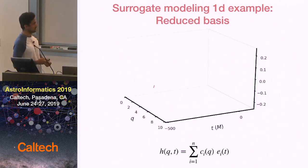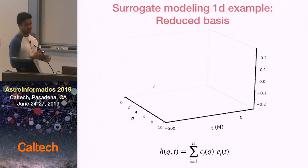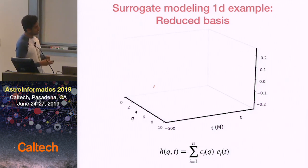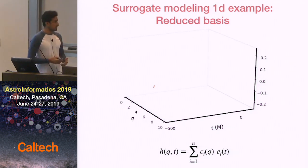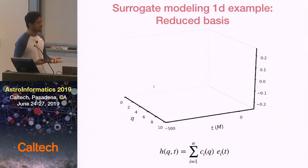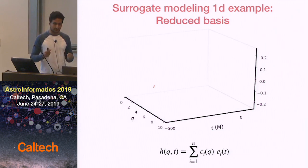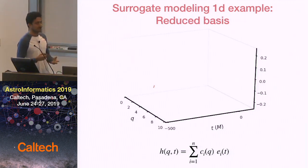I'll take a one-dimensional example where both black holes are non-spinning, so the only free parameter is the ratio of the two masses, Q — the ratio of the larger black hole's mass to the smaller black hole's mass. In order to build a surrogate model, you start with a data set of waveforms — all of your numerical relativity waveforms in that parameter space. The first thing you want to do is build an accurate basis made up of only a small set of waveforms. In fact, we use the same waveforms we are trying to model to build our basis.